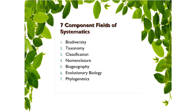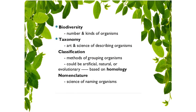Here we have seven component fields of systematic that we will discuss one by one: biodiversity, taxonomy, classification, nomenclature, biogeography, evolutionary biology, and plant phylogenetics. These are all the various fields associated with plant systematic. First, biodiversity encompasses the study of variability within species — referred to as genetic diversity — and amongst species — referred to as species diversity — of all living and fossil organisms and their environments.